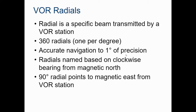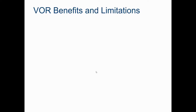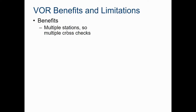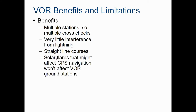The radials always start 90 degrees magnetic east from the VOR station. That does not mean it's pointing straight to the right on a map - it's magnetic east, so it's actually going to be a little bit south of easterly direction. VOR is effective at 1,000 feet above ground level - you can only navigate with VOR after you're in the air. Benefits include many stations, very little interference from lightning, straight line courses, and immunity to solar flares that might affect GPS.